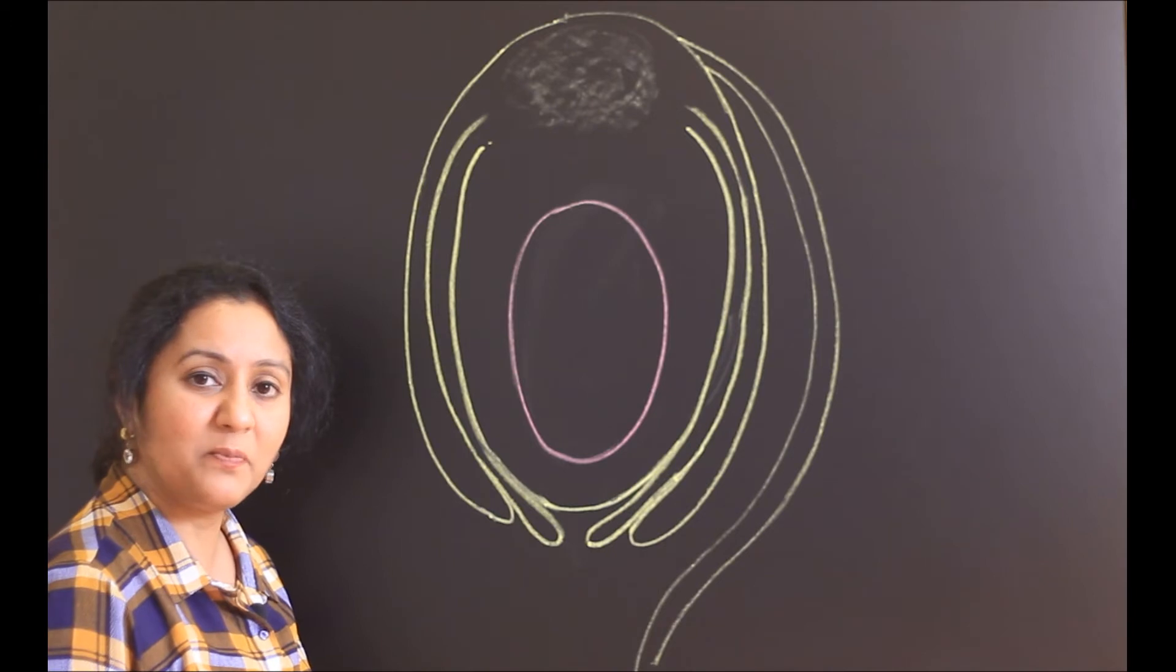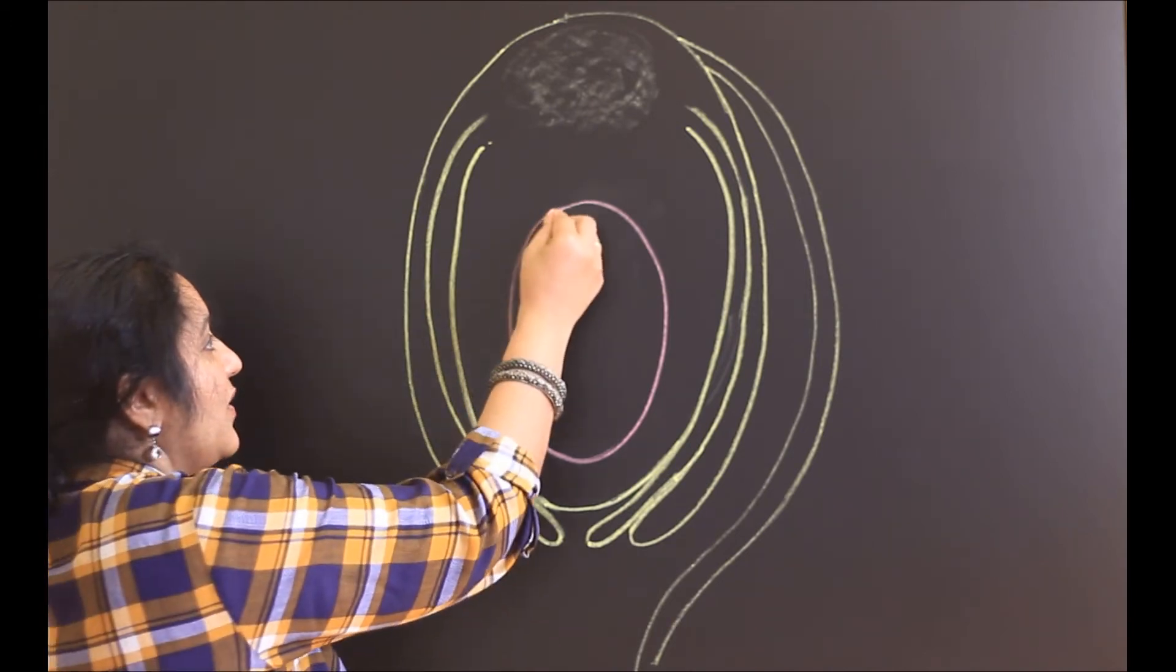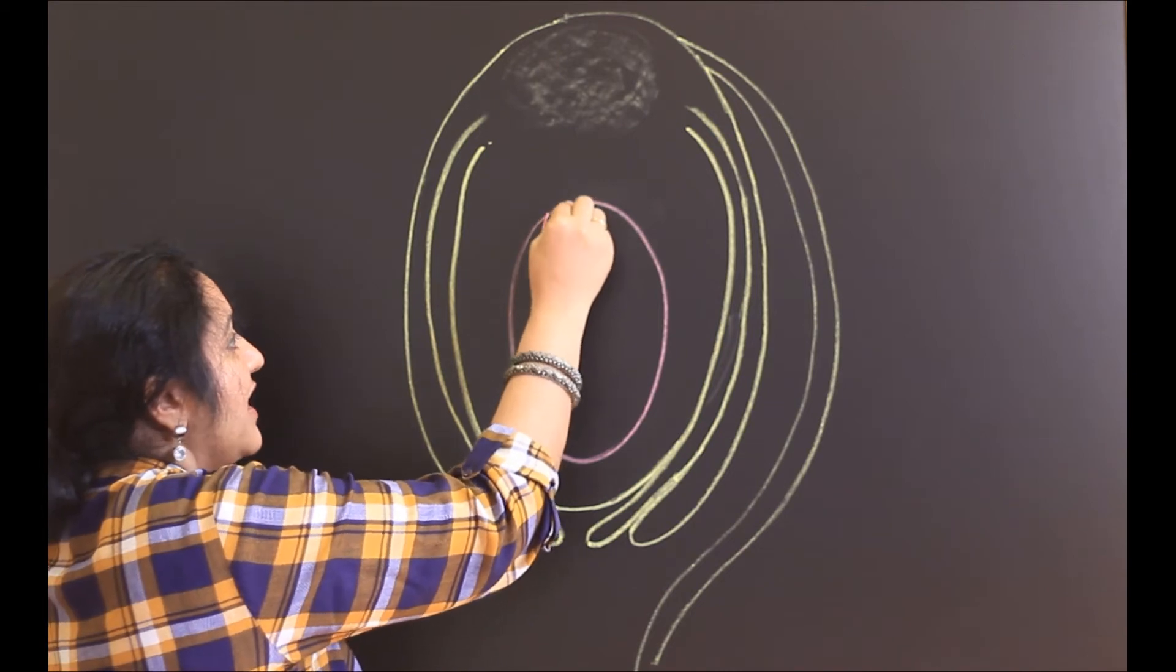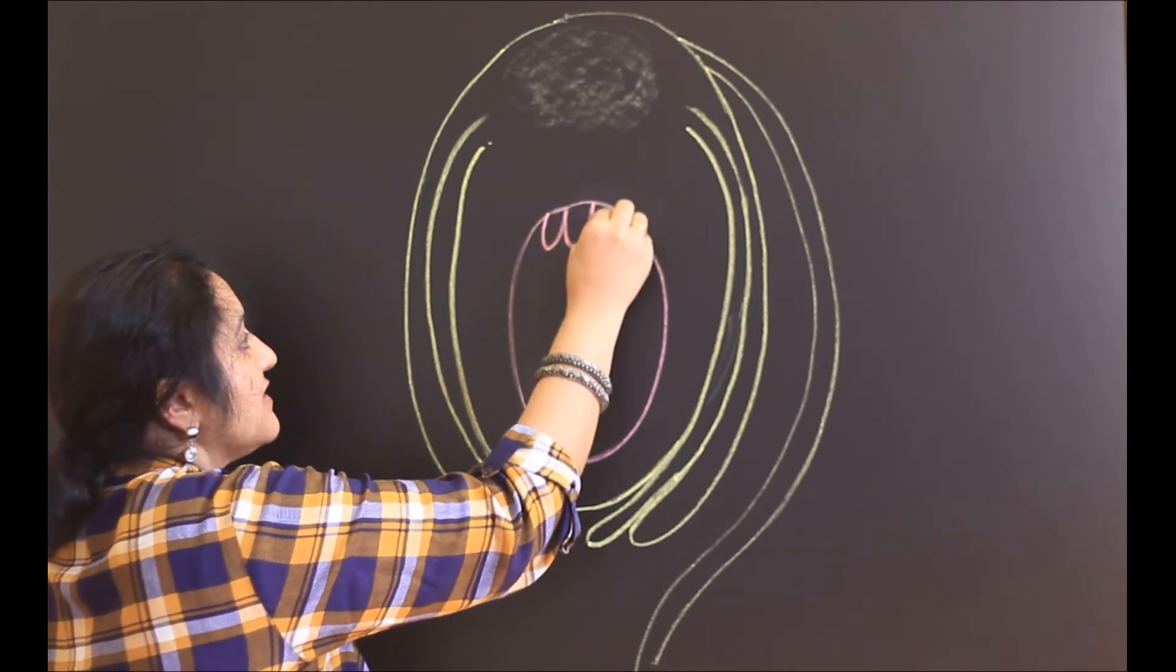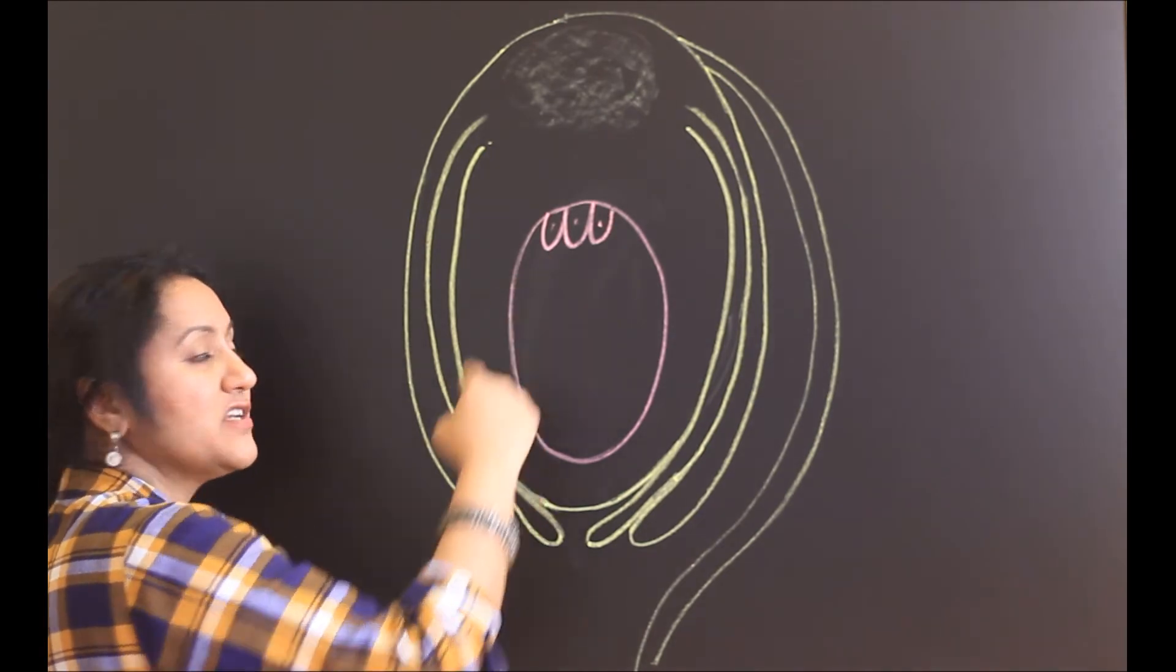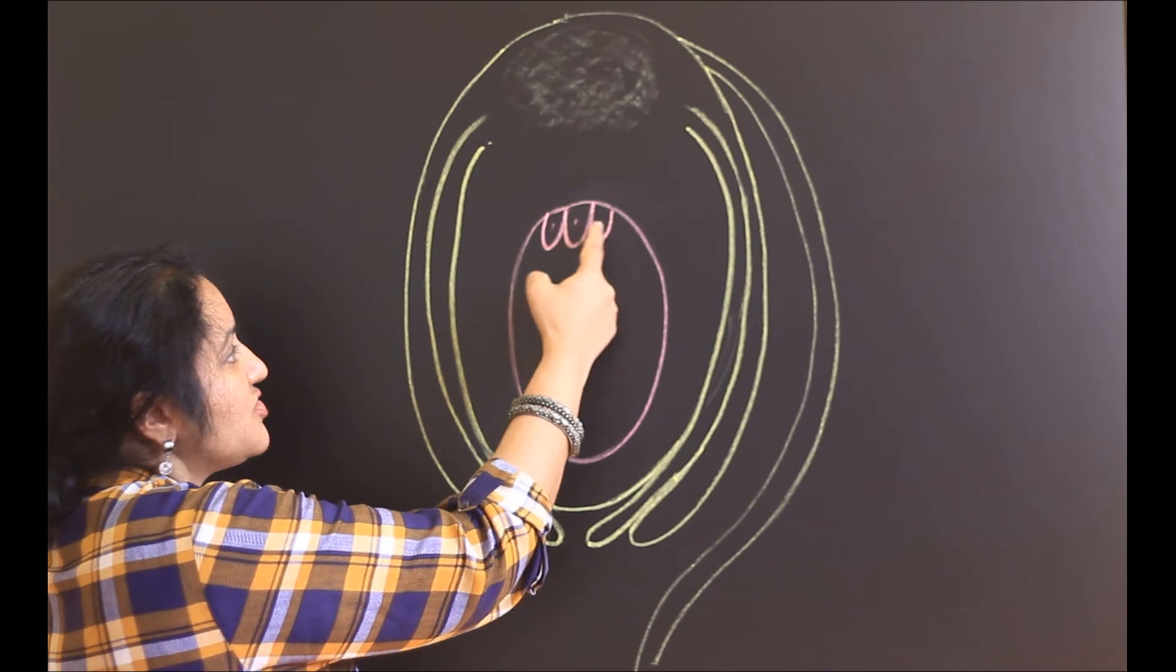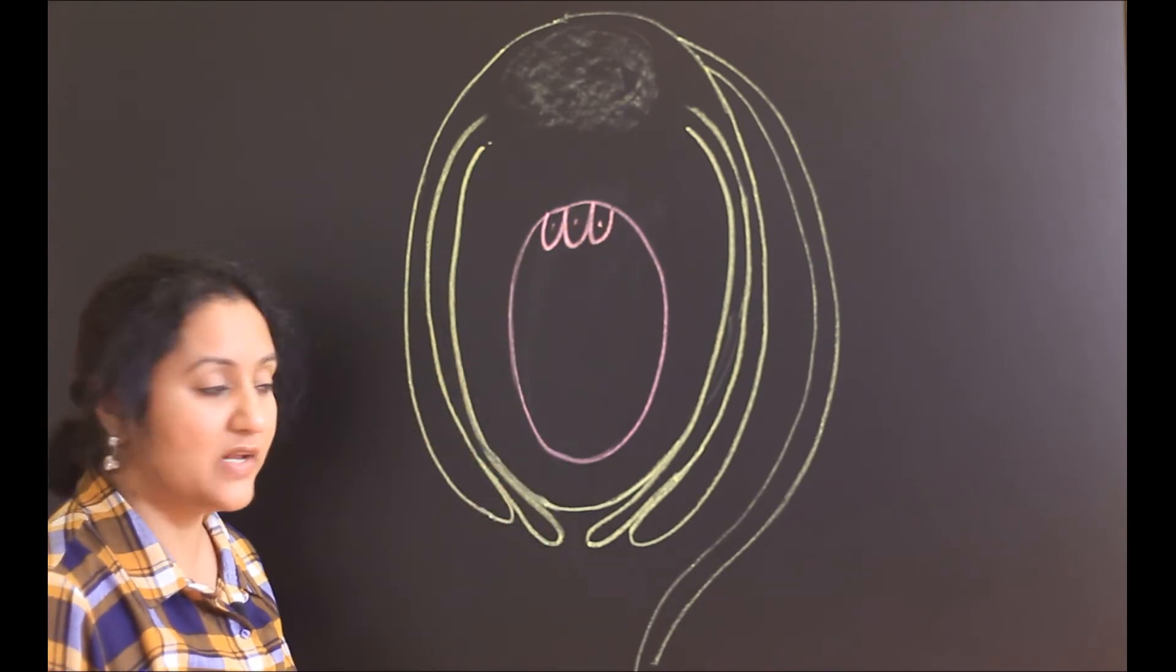What is there in the chalaza and micropyle region of the embryo sac? It has cells. In the chalaza area, you can find three cells. They are called as the antipodal cells. What happened to antipodal cells after fertilization? They will degenerate. These dots represent nucleus.